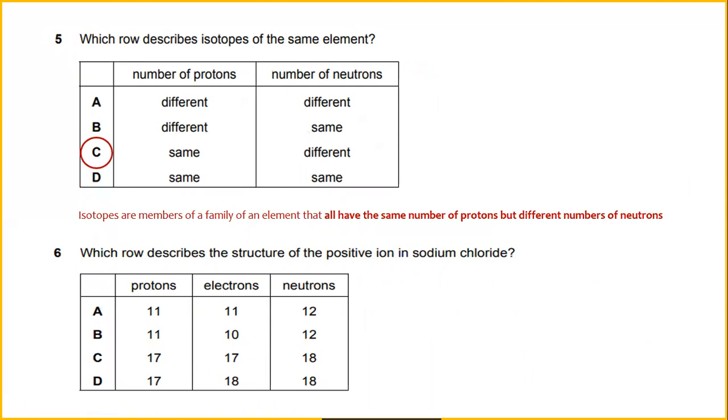Which row describes the structure of the positive ion in sodium chloride? So basically, we have proton 11, electron 11, and neutron 12. So the answer will be A.